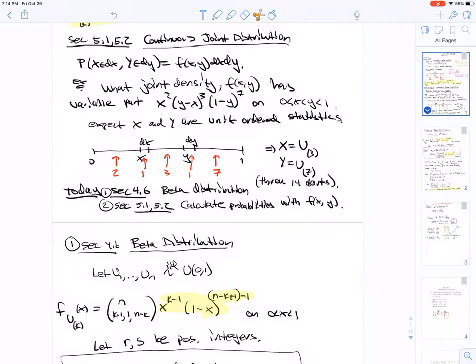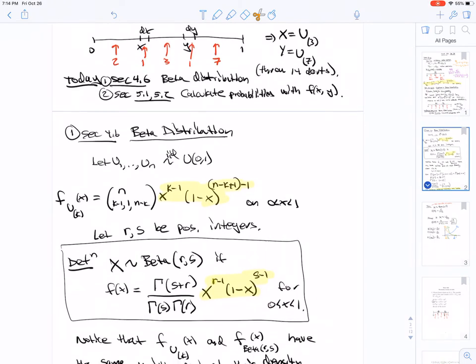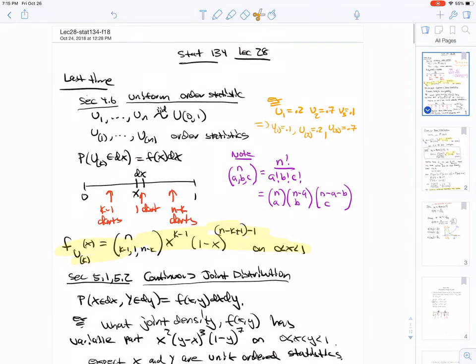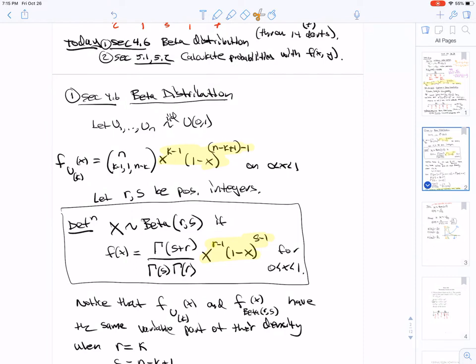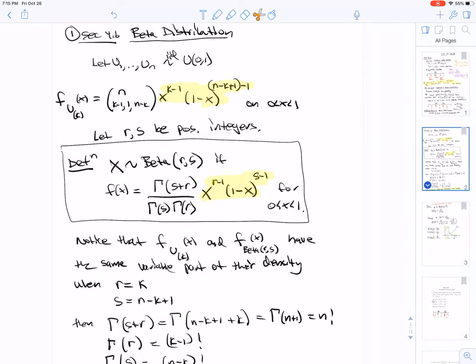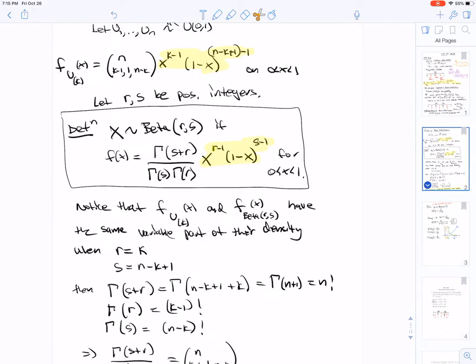Today we're going to talk about the beta distribution and calculate probabilities with the joint density. The beta distribution includes the uniform order statistics as a special case. Here's the definition of beta: it comes with two parameters r and s, and you can see that it has the same variable form as the order statistic does. Matching up r and s, we see that r is k and s is n minus k plus 1.